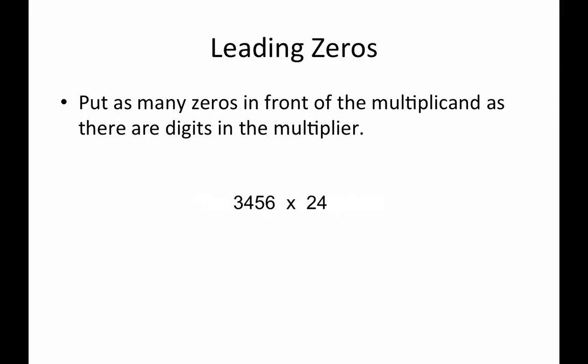For example, we have 3456 times 24. The multiplier is 24. It has two digits, so we put two leading zeros in front of the 3456.